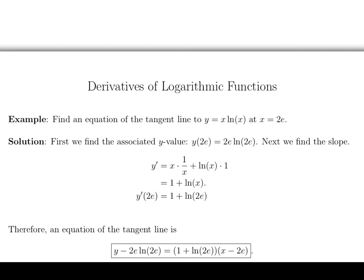So an equation of the tangent line will look like this. y minus 2e log 2e, that was our y value that we had up here, that's what goes there, equals the slope 1 plus log of 2e, that's what we calculated here, that's what went there, times x minus 2e. And the 2e was up here, and that got put into here.